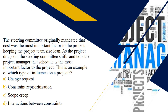Here's a scenario where the steering committee originally mandated that cost was the most important factor to a project, keeping the project team size very lean. As the project drags on, the steering committee shifts and tells the project manager that schedule is the most important factor. This is an example of scope creep. Influences can manipulate or impact existing constraints or may bring about new types of constraints — that's what scope creep is all about.